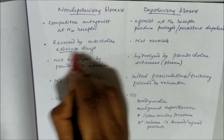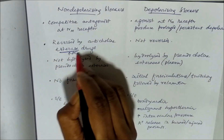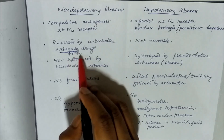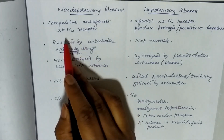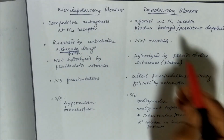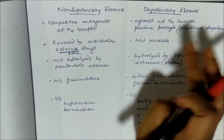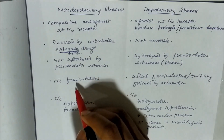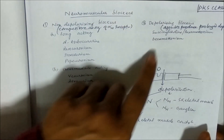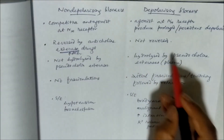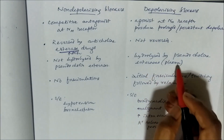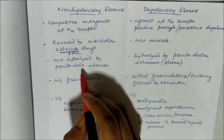Non-depolarizing block can be reversed by anticholinesterase drugs, which increase the level of acetylcholine. Since it is a competitive antagonist, acetylcholine as the agonist can reverse the actions of these blockers. Whereas in the case of depolarizing blockers, there cannot be reversal. Depolarizing blockers like succinylcholine and suxamethonium can be hydrolyzed by pseudocholinesterases present in plasma, whereas non-depolarizing blockers are not hydrolyzed.